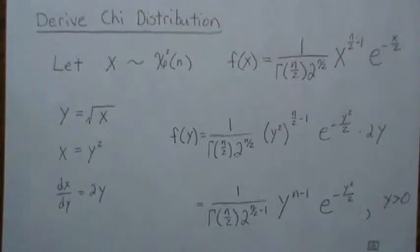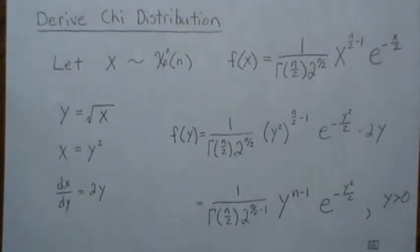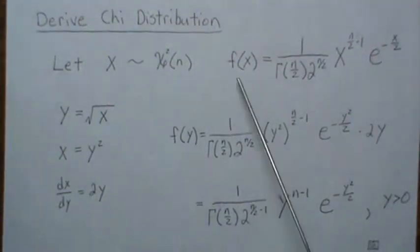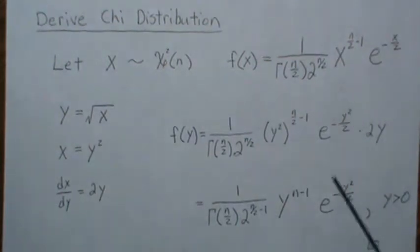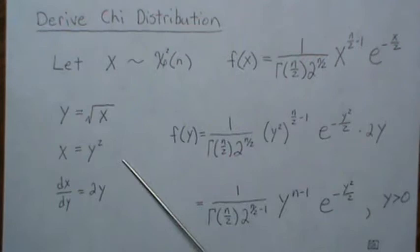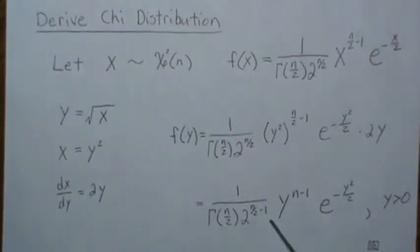...they all combine into Y raised to n minus 1, and that's the density of a chi distribution. Since the original integrated to one, we know this does too, because we could just use the inverse transformation and go back to it, and it integrates to one.